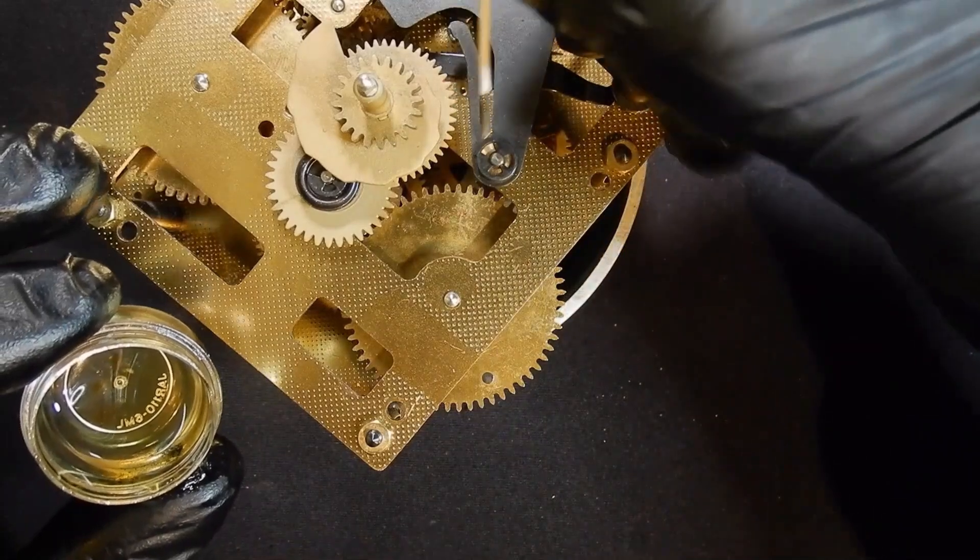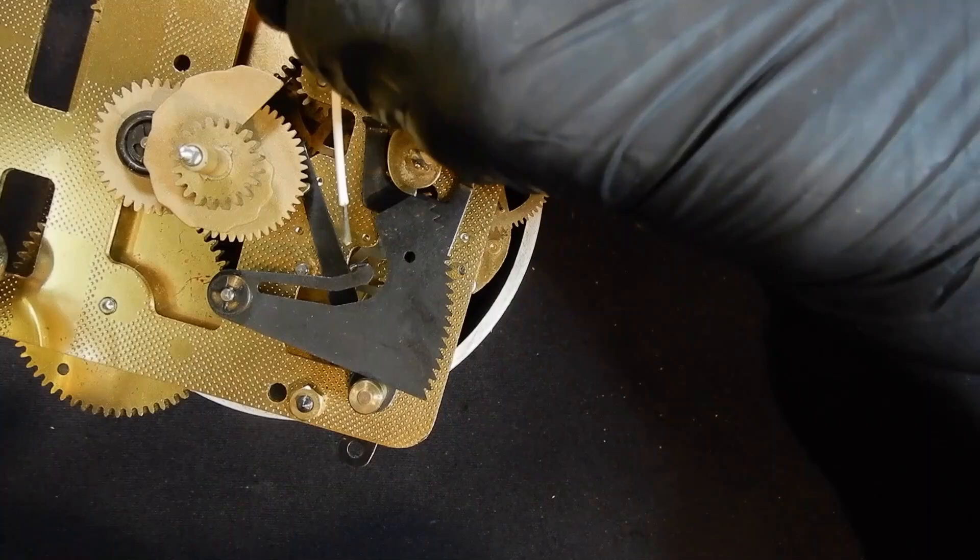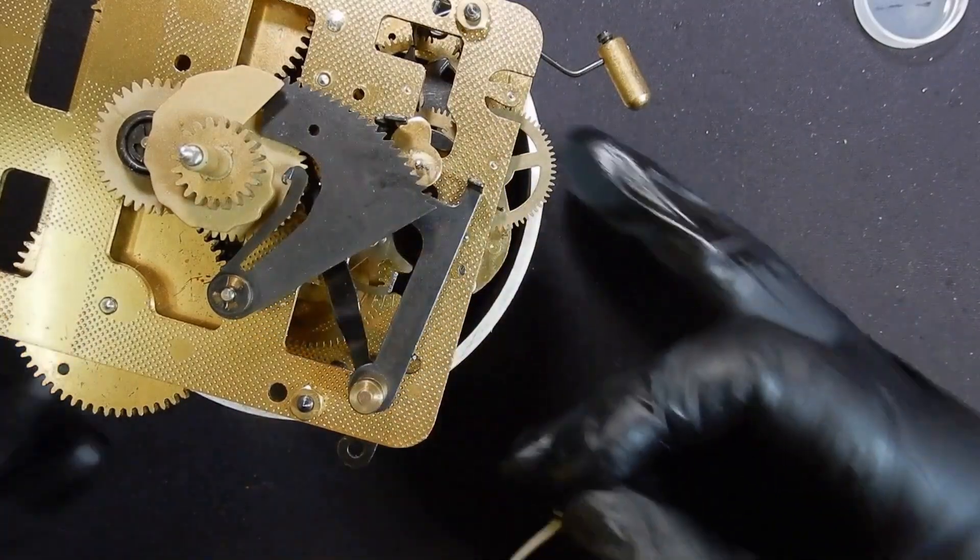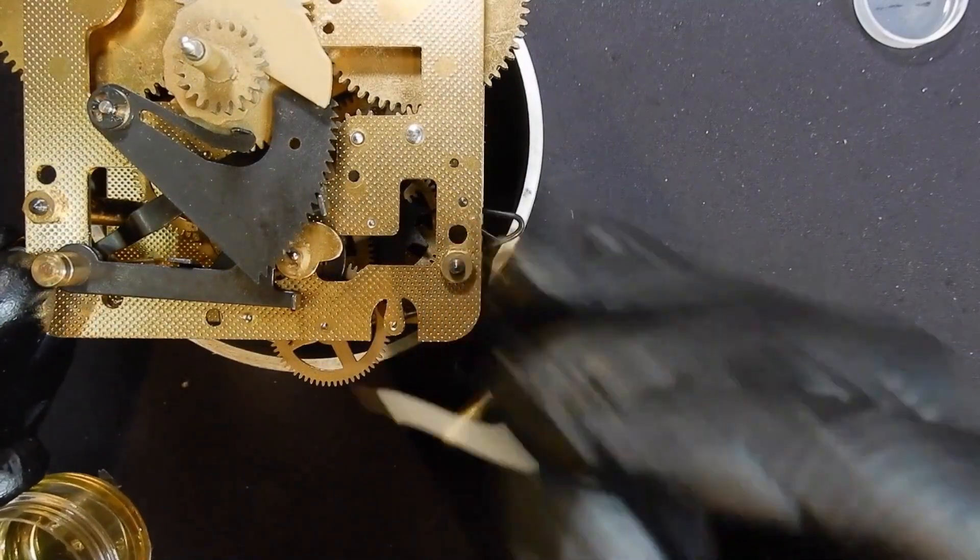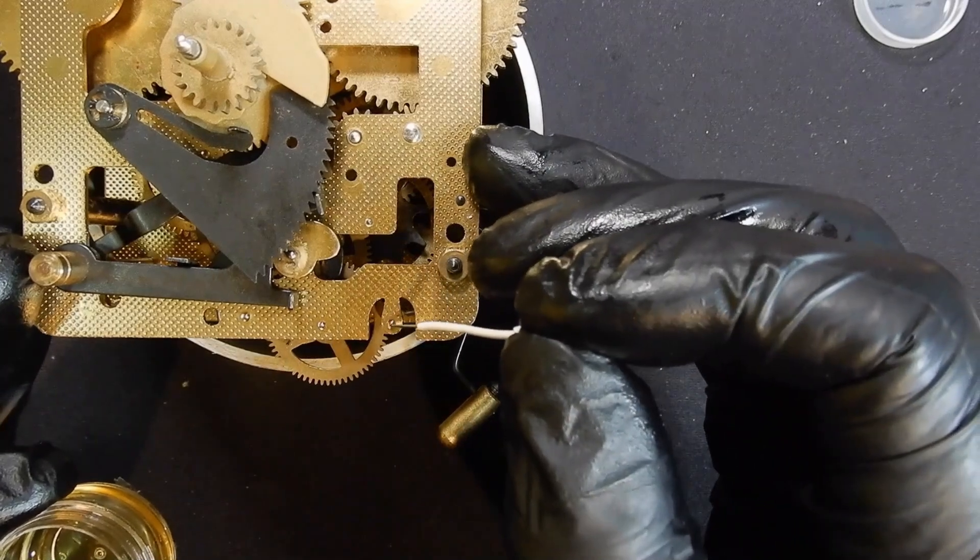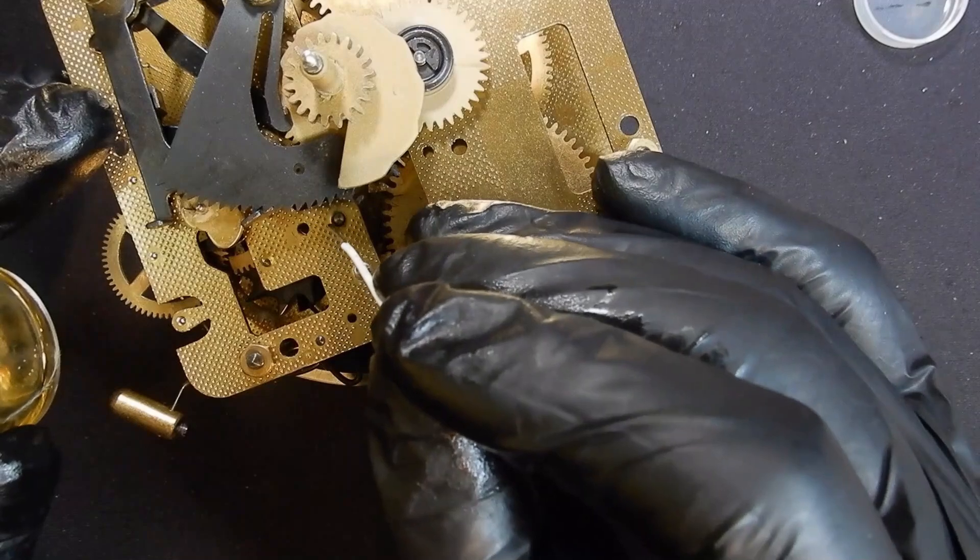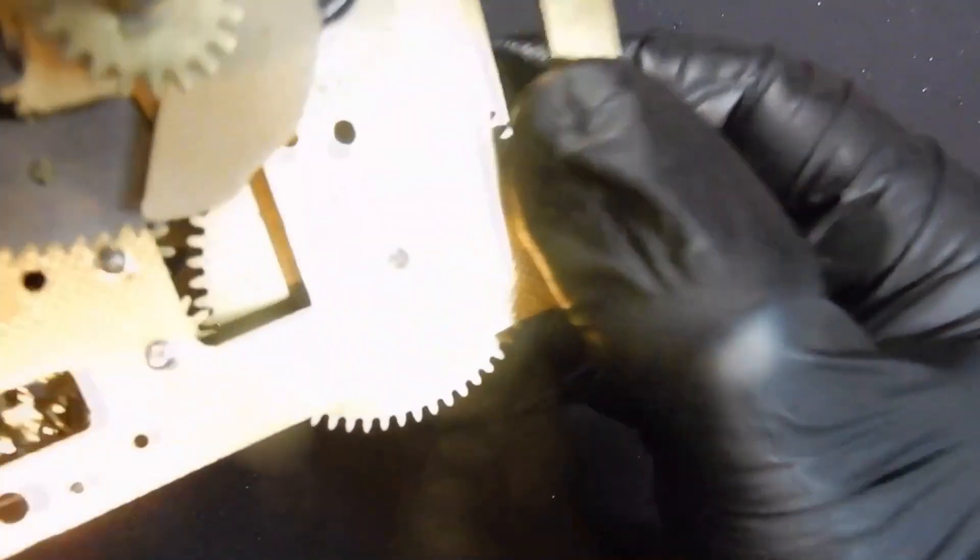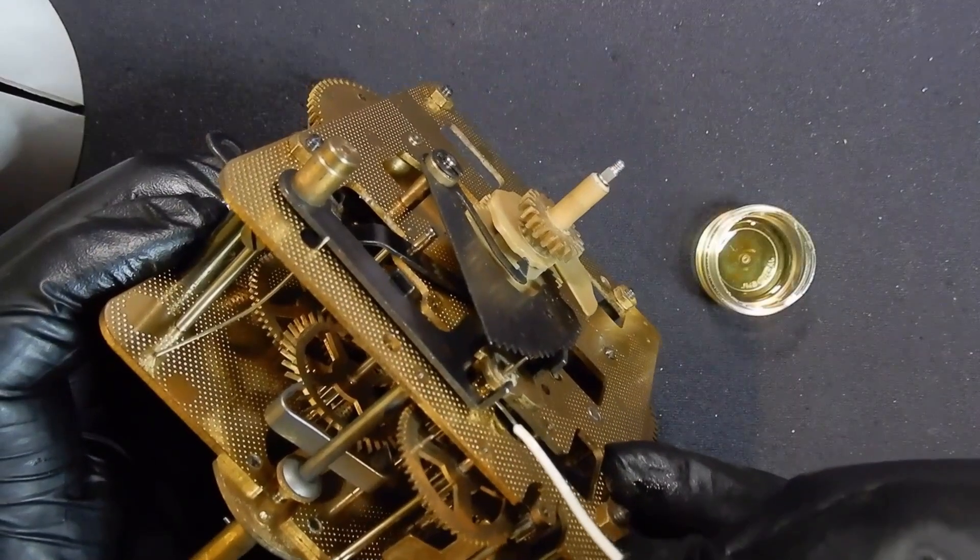Now see what we've got inside here. Escape wheel, warning wheel, warning wheel, the fly, star wheel. It'll be easier to roll the movement over and then put a drop down on the maintenance cam.